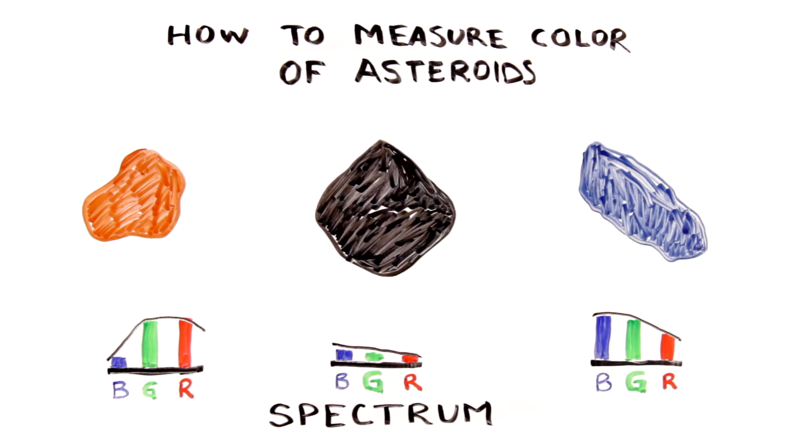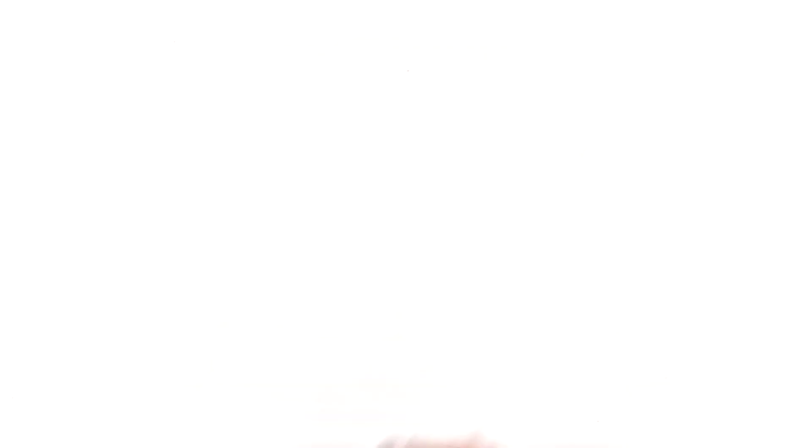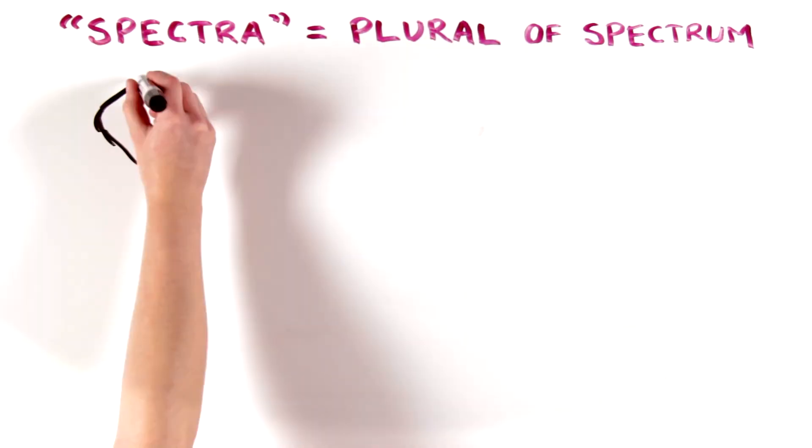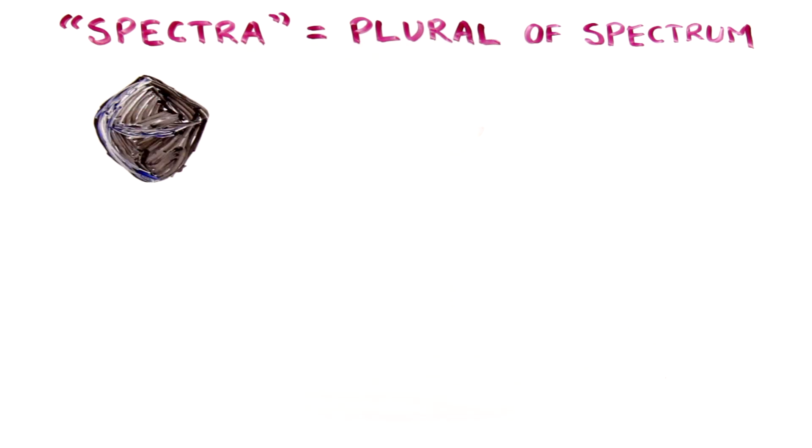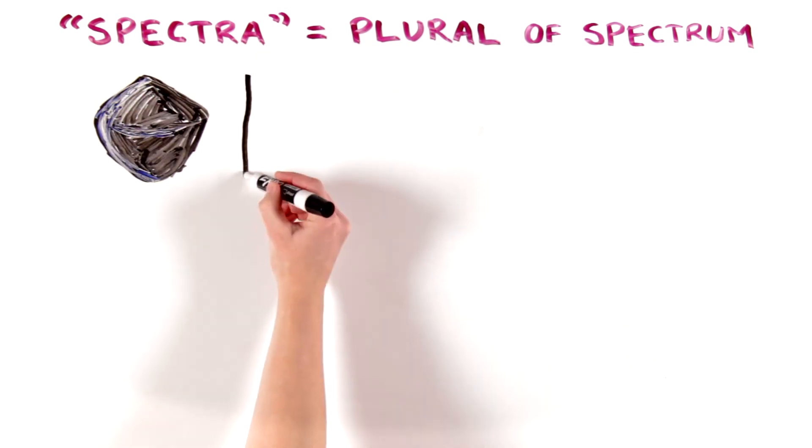What do asteroid spectra look like? Asteroid Bennu, the target of the OSIRIS-REx sample return mission, reflects more blue light than other colors, so its spectrum is tilted like this.